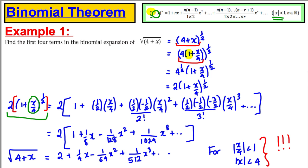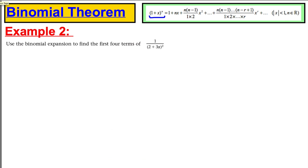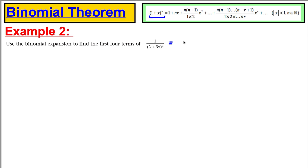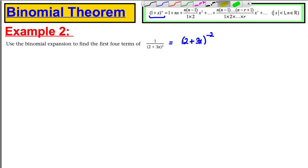Okay, one more example. You might want to have a go yourself first. We're expanding 1/(2 + 3x)². Firstly, let's write this in index form: (2 + 3x) to the power of negative 2. Now to use the binomial theorem, I need to make this leading number 1, so I'm going to factorize out the 2.